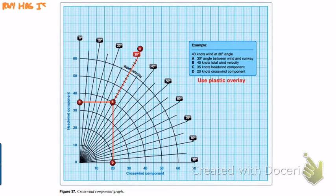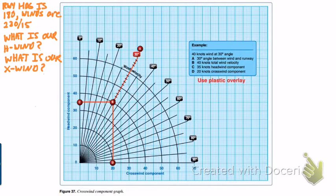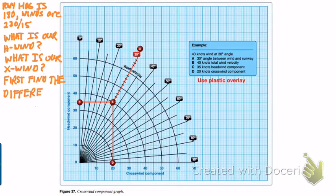We're going to start with the headwind-crosswind chart. We're going to first establish our conditions here. Runway heading in this case is 180 with winds at 230 at 15 knots. We need to figure out our headwind and our crosswind. To do that, we need to first find our angular difference between our runway heading and our wind, which is 230. So we take 230, subtract 180, and we end up with a 50-degree difference.